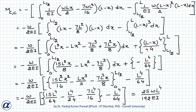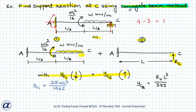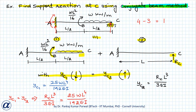Evaluating the integral gives the moment at C in the conjugate beam as 25WL⁴/(192EI), which equals yc1 (downward displacement at C). Applying the compatibility condition yc1 = yc2: RC·L³/(3EI) = 25WL⁴/(192EI), which gives RC = 25WL/64.